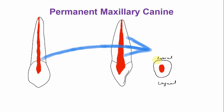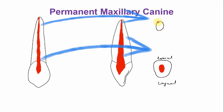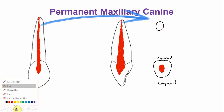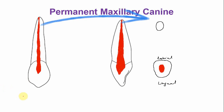In the apical one-third of the root, the shape of the canal is rounded — round in the apical one-third area — and it is present in the center of the root.